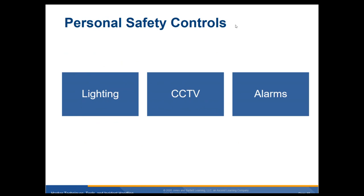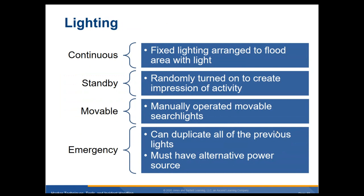Personal safety controls, like for the parking lot: make sure there's good lighting, closed-circuit TV, and alarms — because one of your assets is your personnel, so you want to make sure they're safe. Lighting types: continuous lighting, fixed lighting arranged to flood an area with light like in a parking lot. Standby lighting randomly turns on to create an impression of activity — that's where you see lights come on and off all night long in a building. Moveable, manually operated searchlights like you see in a guard tower. Emergency lights can duplicate all previous lights and must have an alternate power source — like in a hospital, certain lights turn on and run off the generator.